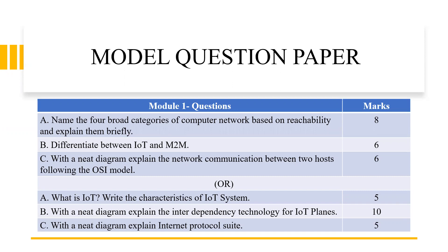And how the weightage of marks will be. In module 1 questions, you have two sets of questions from module 1 — either you will be attempting these three or these three questions. Seeing about the first three sets of questions: name the four broad categories of computer network based on reachability and explain them briefly, which contains eight marks. Differentiation between IoT and M2M is six marks. With a neat diagram, explain network communication between two hosts following the OSI model, which is six marks.